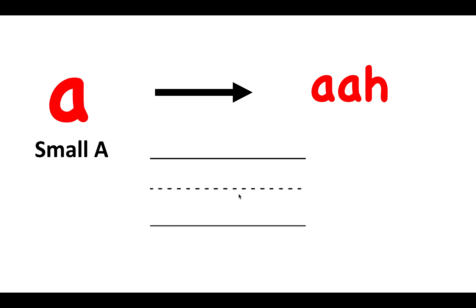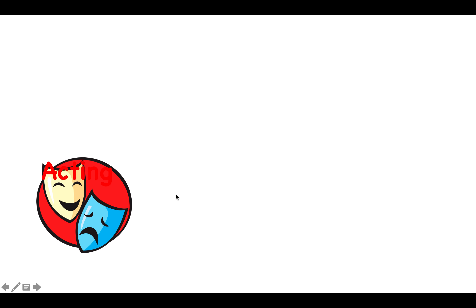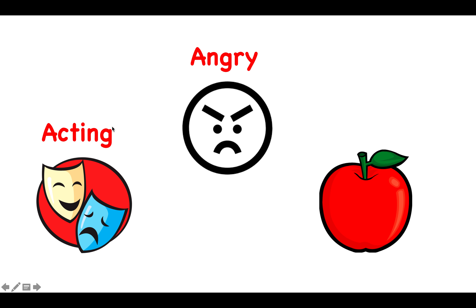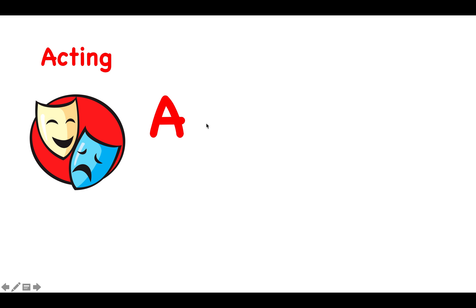Now we will try and look at words that start with the letter A. The first one is acting. The second word is angry. The third word is apple. So now we look at the first word, that is acting. Now let's break up the word into the letters. The letters that make up this word are A, C, T, I, N, G.